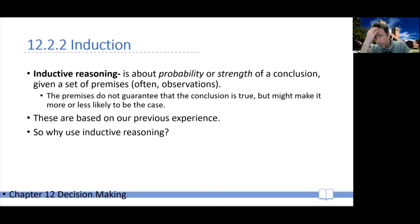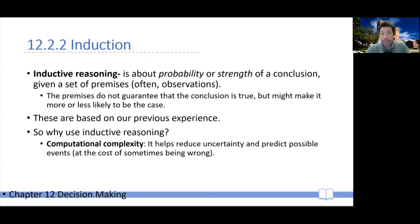But of course, it does raise a good question. If we cannot be sure of an inductive conclusion, and if the inductive conclusion might be incorrect, why on earth would we ever use inductive reasoning? And the answer is that this is about computational complexity. These kind of inferences just help us reduce uncertainty and help us predict possible events. Yes, at the cost of being wrong. But there are many more circumstances where we can do inductive inferences than deductive inferences.